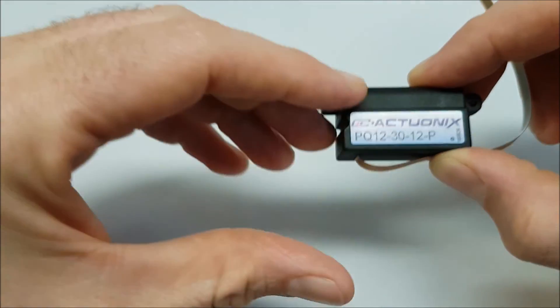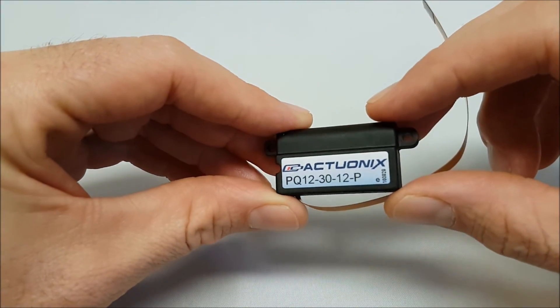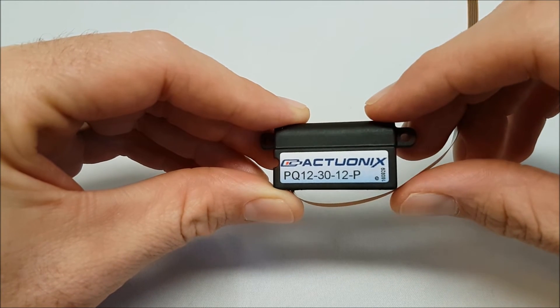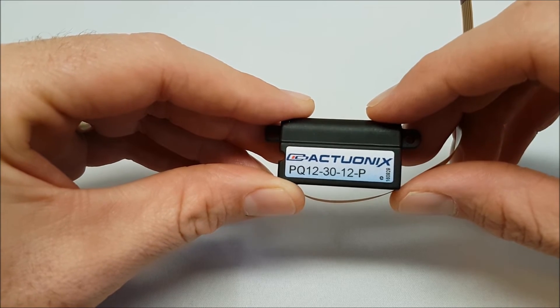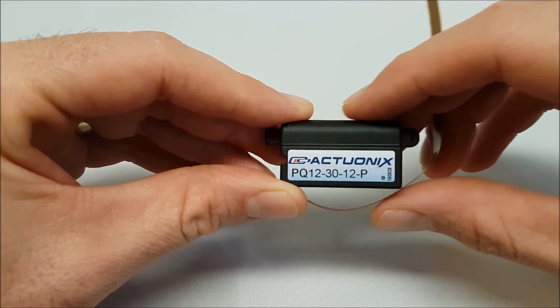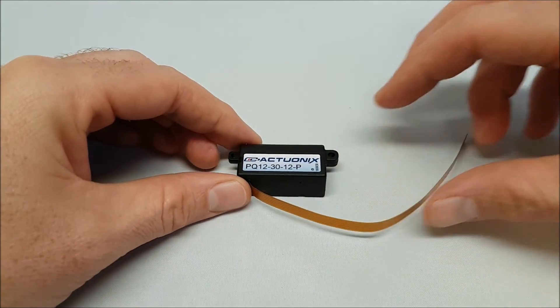This has a built-in position feedback potentiometer and can be operated via our linear actuator control board which turns it into a linear servo giving you USB support, speed control, sensitivity control, position control, and adjustable end limits.